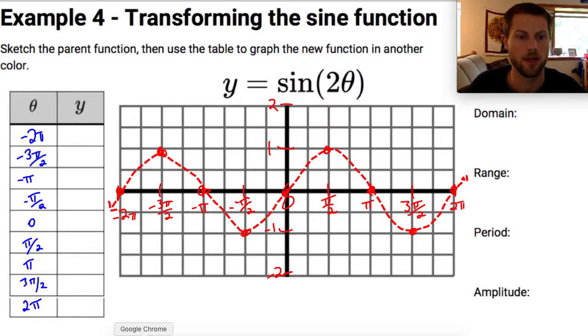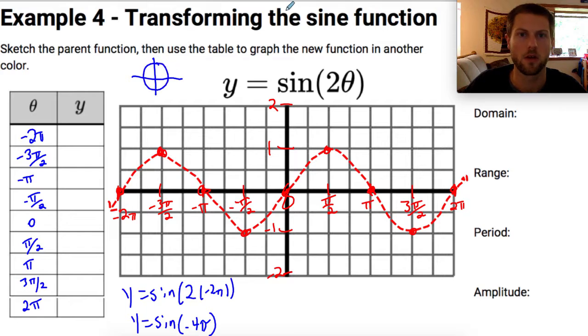Now that I have my table I'm ready to start evaluating. Let's take negative 2 pi and plug it in for sine of 2 theta. So I'm going to take y equals the sine of 2 times negative 2 pi, which is going to be y equals the sine of negative 4 pi. Let's draw a little unit circle up here to help visualize this. Negative 4 pi will be going in the clockwise direction, counting by pi's: negative 1 pi, 2 pi, 3 pi, 4 pi. The y value is 0, so that's going to be 0.